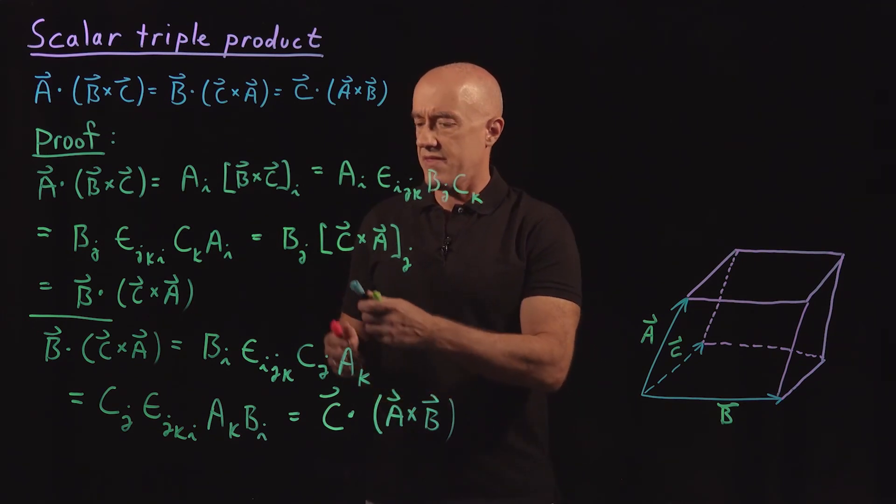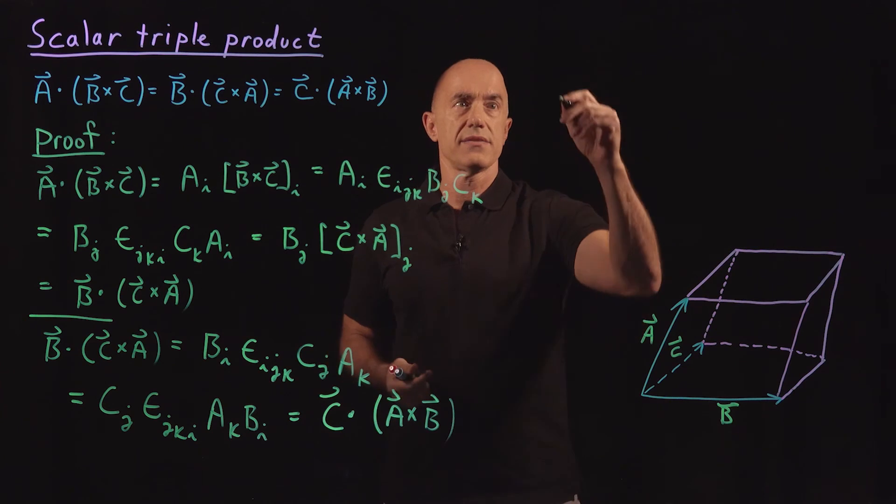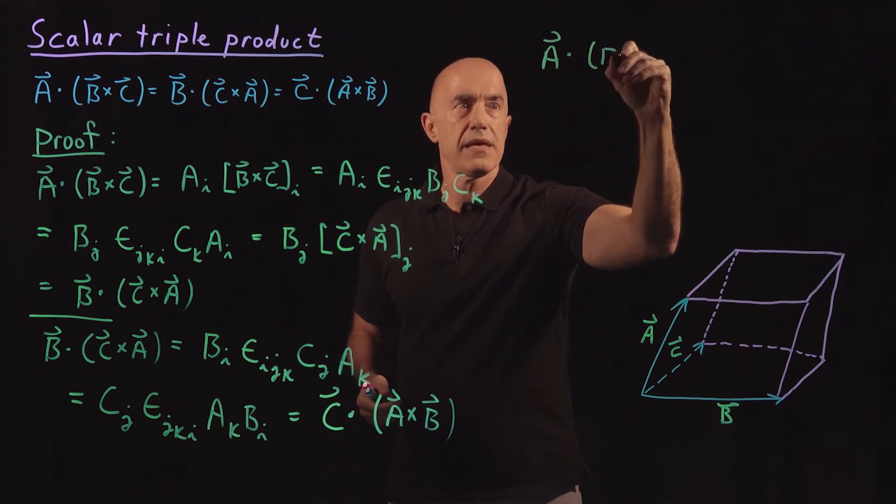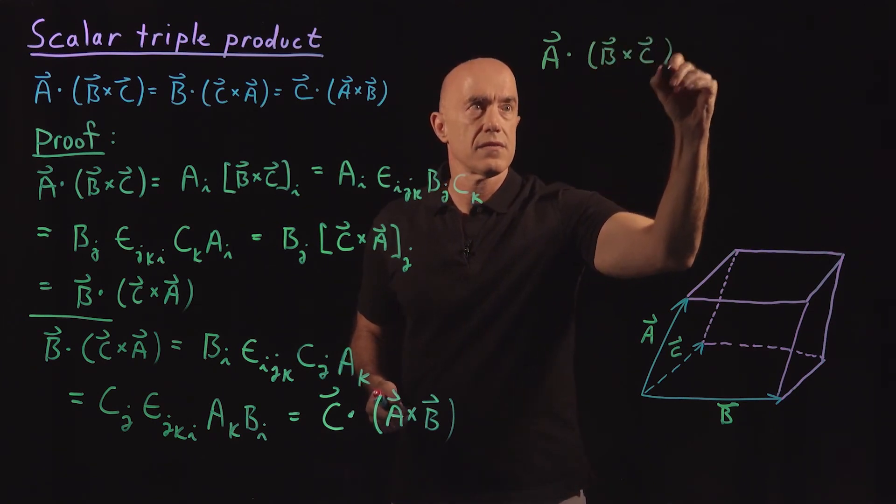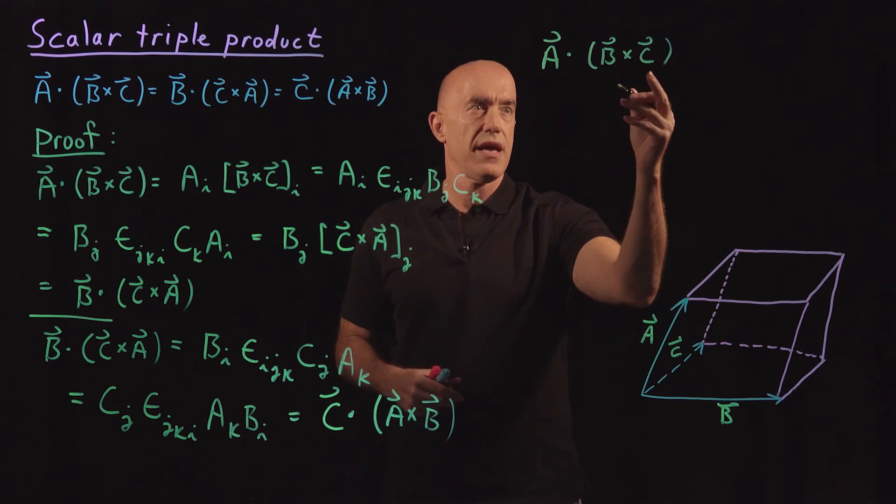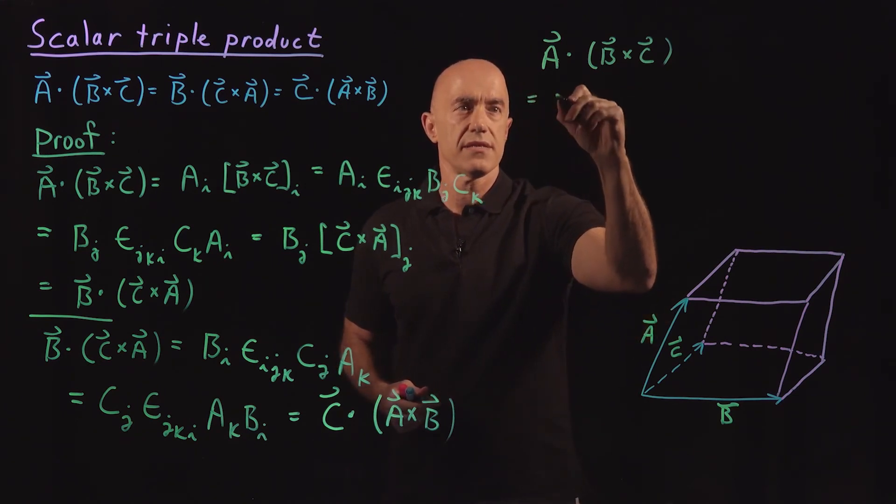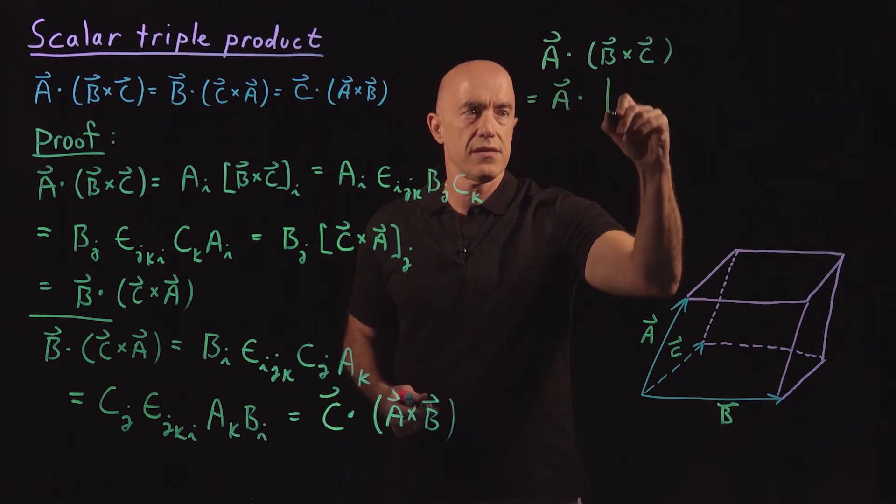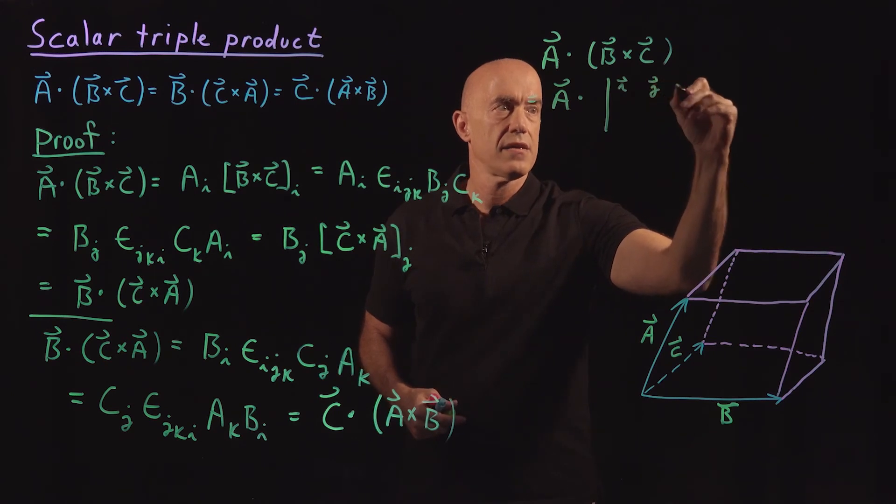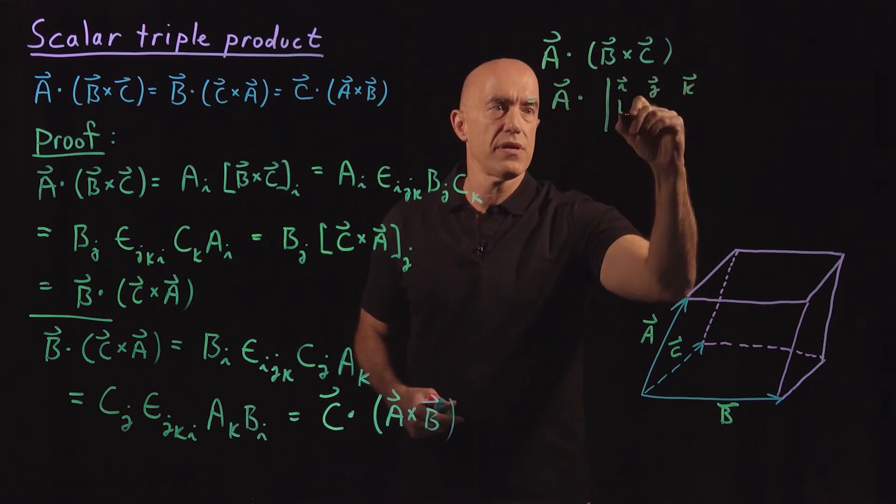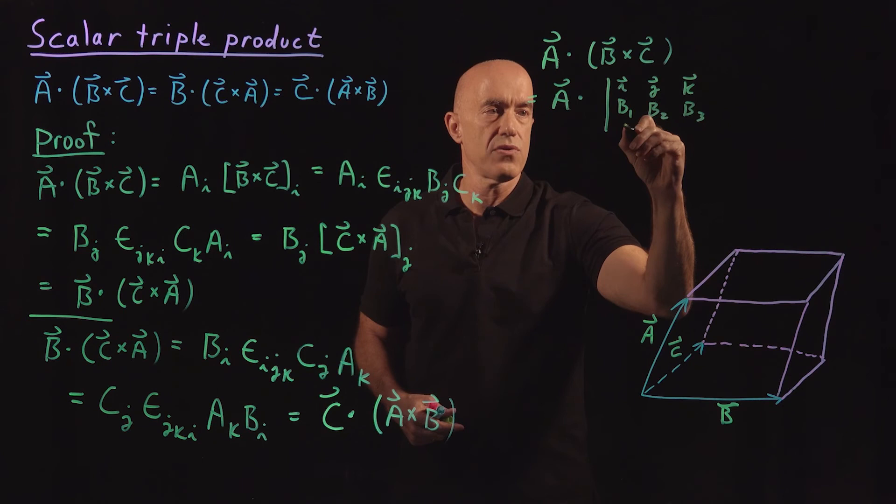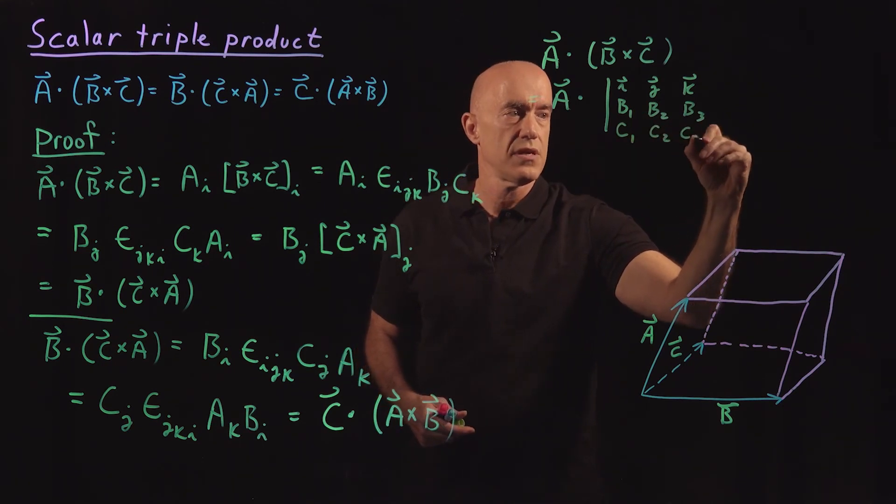Another way of looking at the scalar triple product is by considering A dot B cross C. B cross C is a determinant. We've learned how to write a cross product as a determinant. This is equal to A dot the determinant, where we have the unit vectors in the first row, I, J, K, the B components in the second row, B1, B2, B3, and the C components in the third row, C1, C2, C3.